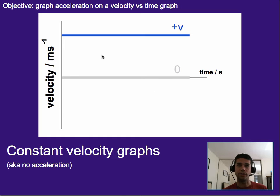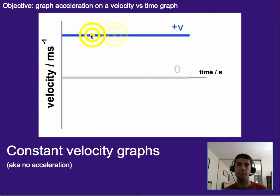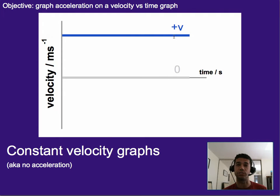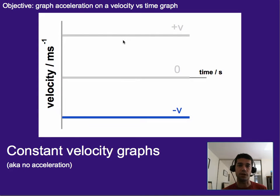Alternatively, we could look at a constant positive velocity, where literally the velocity is positive — 5 or 10 or whatever it would be — the entire time. So as time goes on, the velocity value doesn't change, so it's a flat line. Or a constant negative velocity, where the velocity is a negative value the entire time and that value isn't changing — these are constant velocity graphs.